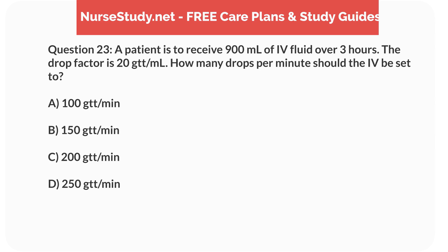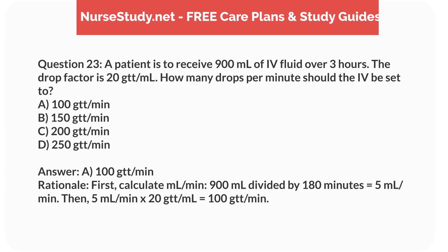Question 23. A patient is to receive 900mL of IV fluid over 3 hours. The drop factor is 20 drops per mL. How many drops per minute should the IV be set to? a. 100 drops per minute, b. 150 drops per minute, c. 200 drops per minute, d. 250 drops per minute. Answer: a. 100 drops per minute. Rationale: First, calculate mL per minute: 900mL divided by 180 minutes equals 5mL per minute. Then, 5mL per minute times 20 drops per mL equals 100 drops per minute.